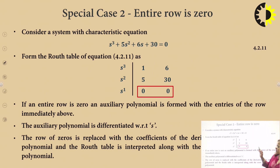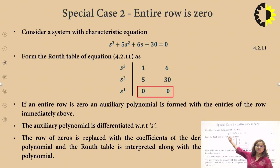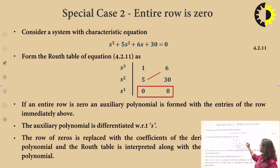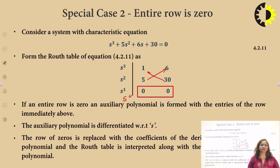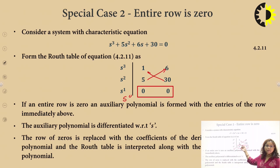Consider another special case wherein a complete row becomes 0. Consider the example with s³ as first row and s² as second row — the s³ row has coefficients 1 and 6, and the s² row has 5 and 30. The next value would be (6×5 − 30) / 5 = 0 — the entire row becomes 0. In this case we replace the complete zero row by the coefficients of the auxiliary polynomial formed from the row just above.